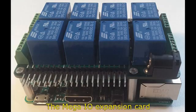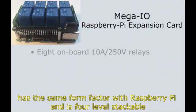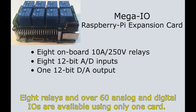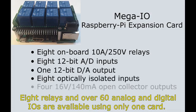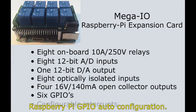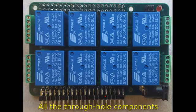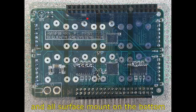The Mega I.O. expansion card has the same form factor as the Raspberry Pi and is four-level stackable. Eight relays and over 60 analog and digital I/Os are available using only one card. The onboard eSquare supports Raspberry Pi GPIO auto-configuration. All through-hole components are mounted on the top and all surface mount components on the bottom.